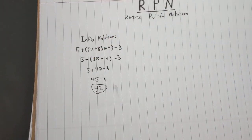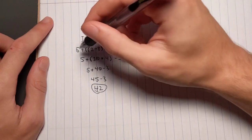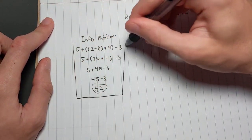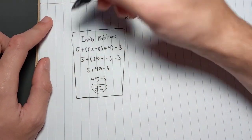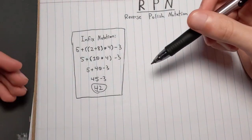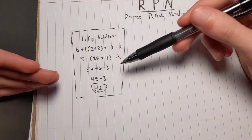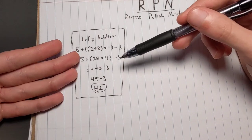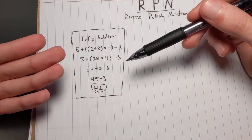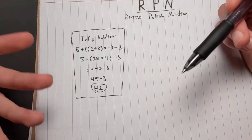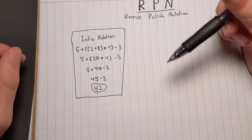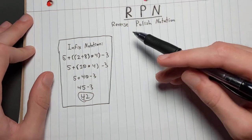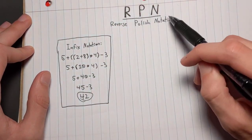So that is our answer — 42. If you've ever been to elementary school, this should seem very intuitive. This is the notation that everyone uses, nothing unusual about it. So let's rewrite this and solve it using Reverse Polish Notation instead.